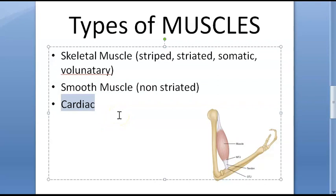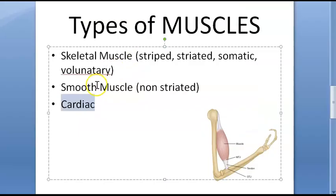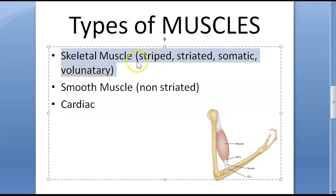Cardiac muscle fibers are uninucleated with faint light and dark bands. The nerve supply is from the autonomic nervous system — you cannot control your heart rate. Blood supply is through the coronary arteries. Cardiac and smooth muscles do not get fatigued and are involuntary. Skeletal muscles are voluntary but do get fatigued — you cannot exercise indefinitely.